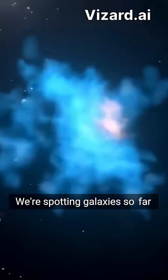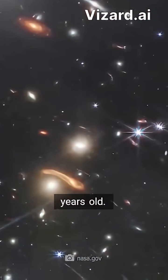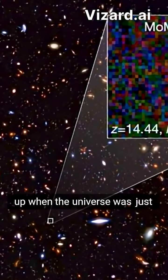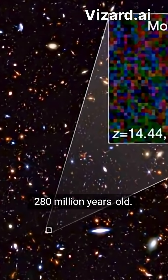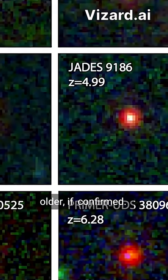We're spotting galaxies so far away they existed when the universe was barely 200 million years old, basically a cosmic toddler. One confirmed galaxy, charmingly nicknamed Mom Z14, showed up when the universe was just 280 million years old. And some candidates might be even older if confirmed.